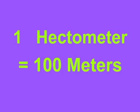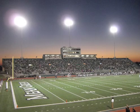If we multiply by 10 again, we get 1 hectometer. 1 hectometer equals 100 meters. An example of a hectometer is a football field or 10 buses lined up end-to-end.